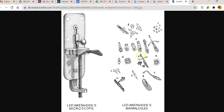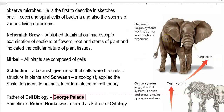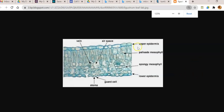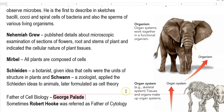The next contribution is by Nehemiah Grew. He published details about microscopic examinations of cross sections of flowers, roots, and stems of plants, and indicated the cellular nature of plant tissues. Cellular nature of plant tissues was proved for the first time by Nehemiah Grew using microscopic cross sections. This is what a plant cell's microscopic cross section looks like.